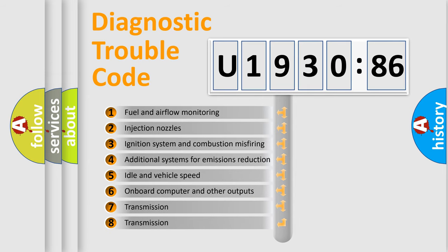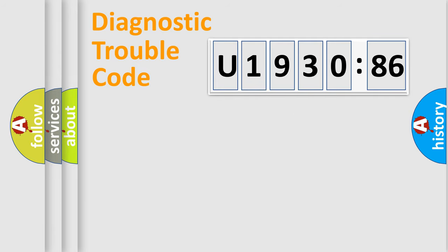The third character specifies a subset of errors. The distribution shown is valid only for the standardized DTC code. Only the last two characters define the specific fault of the group.